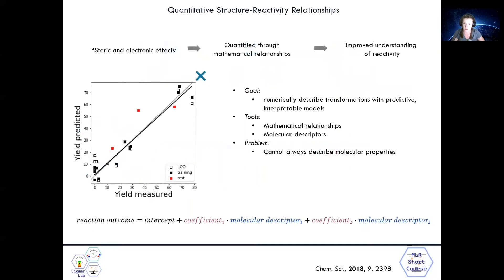So in a little more detail, though we commonly invoke the concept of steric and electronic effects as what dictate reaction outcomes, data science techniques used in our lab can be used to quantify reaction outcomes as a function of molecular properties through mathematical relationships. In other words, our goal is to numerically quantify properties of molecules and correlate those numbers to reaction outputs. We accomplish this using mathematical relationships and molecular descriptors. These correlations yield models that can help us improve and understand reactivity as described by this equation, where a reaction outcome such as yield or selectivity equals an intercept plus coefficient 1 times molecular descriptor 1 plus coefficient 2 times molecular descriptor 2, and so on.